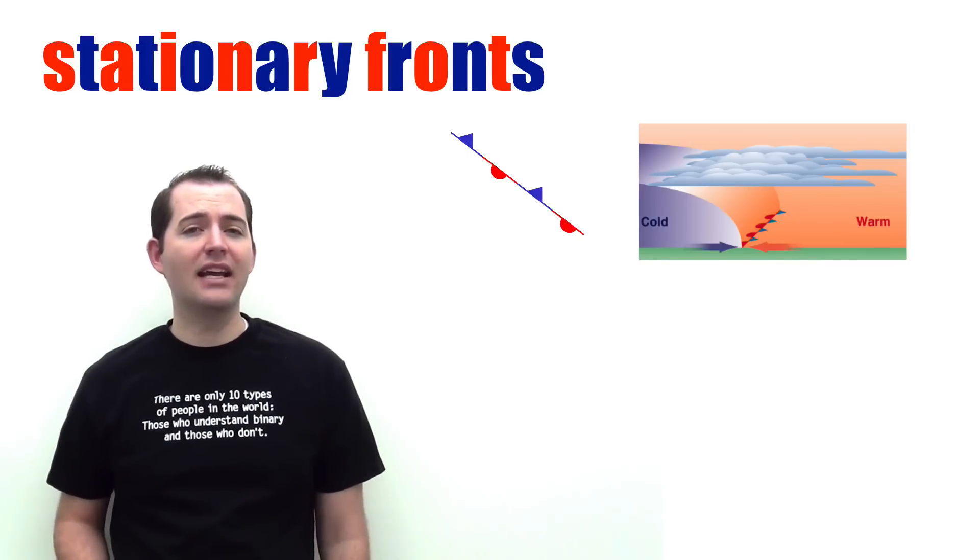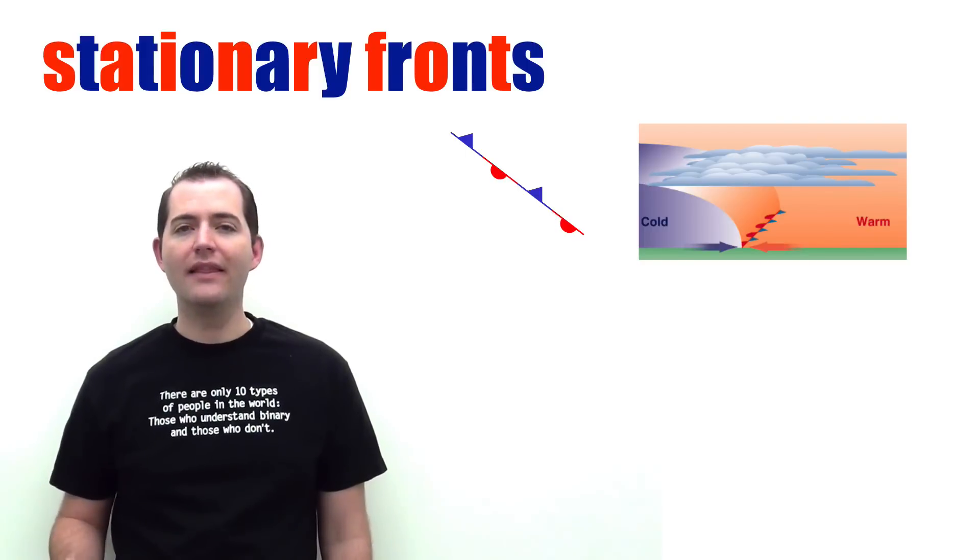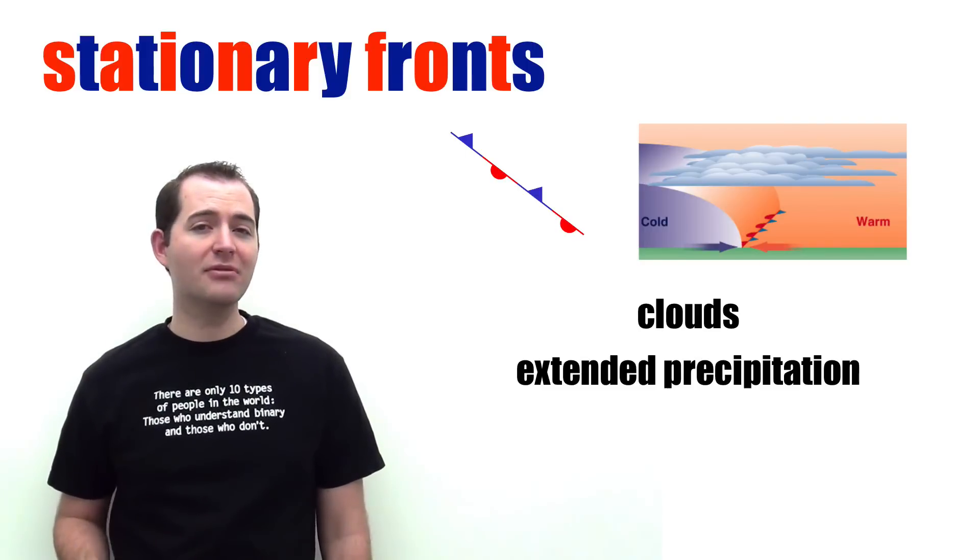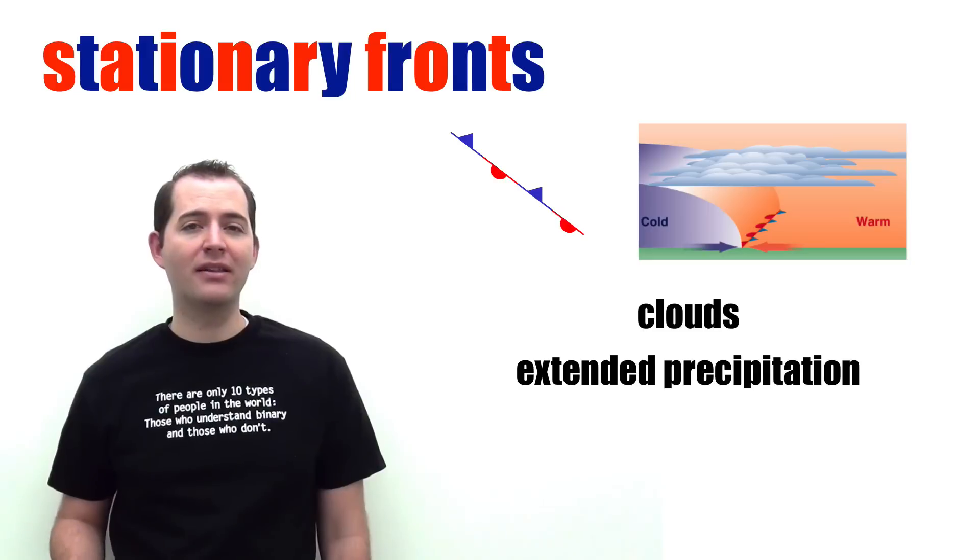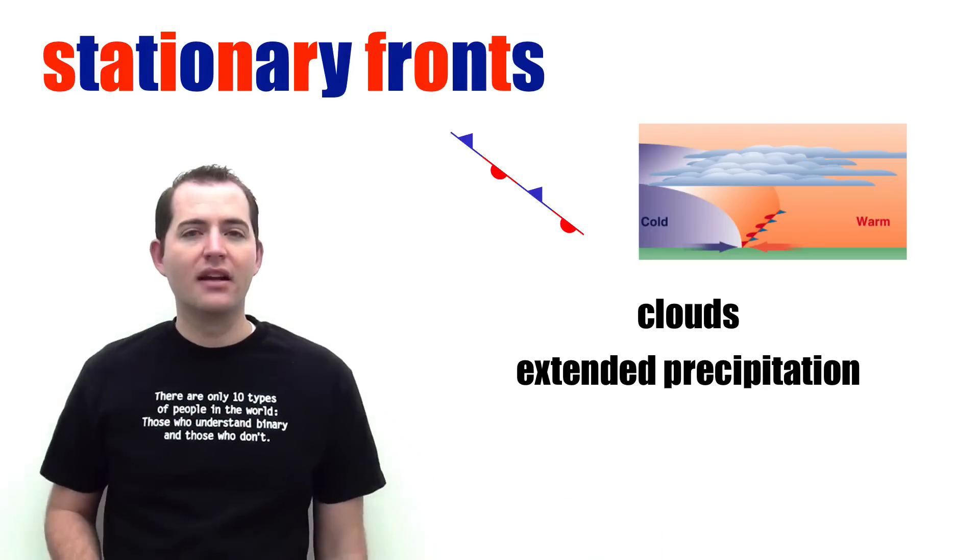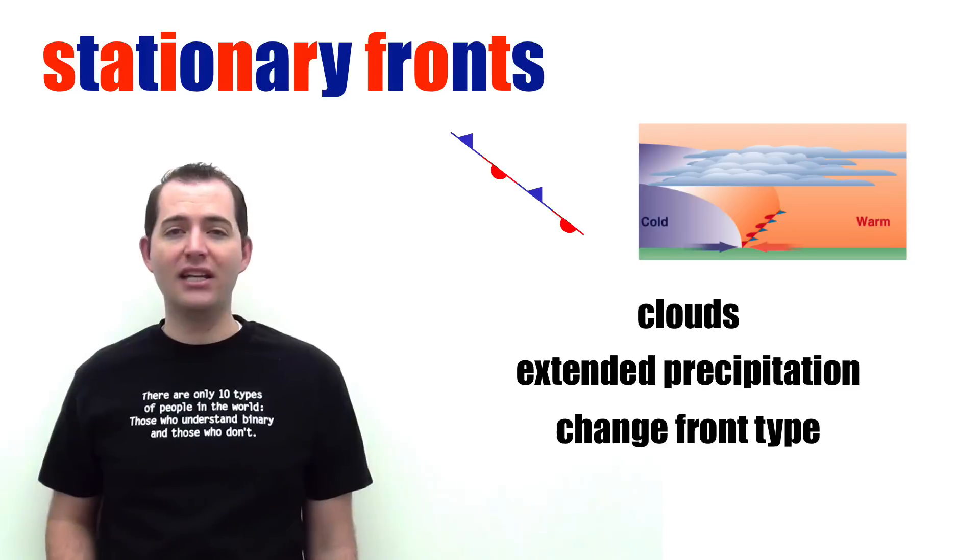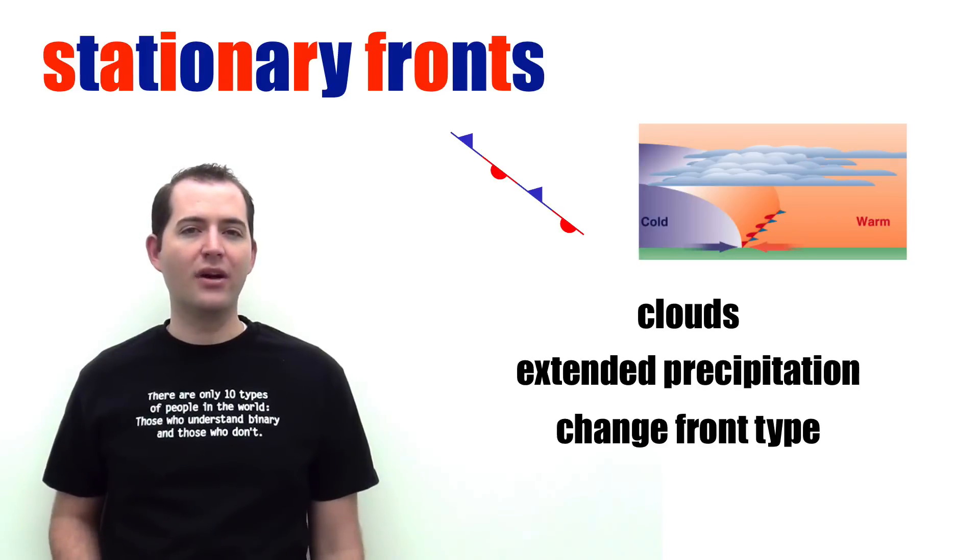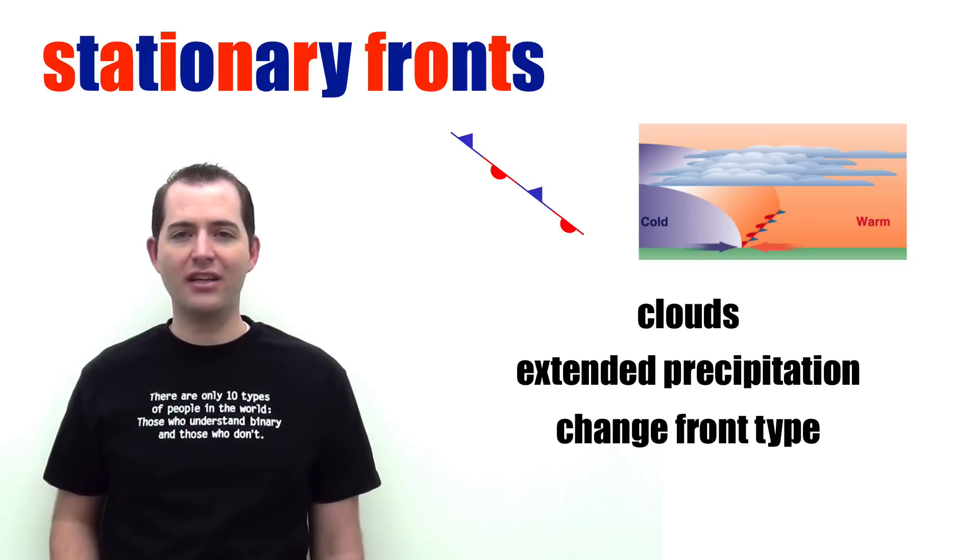Stationary fronts often stay in one spot for an extended amount of time, and they can include clouds and extended precipitation depending upon the type of fronts involved. Stationary fronts can be changed into another type of front when another air mass moves into the area.